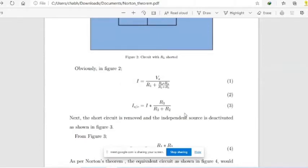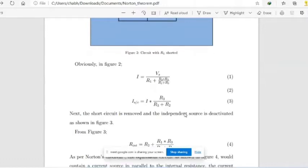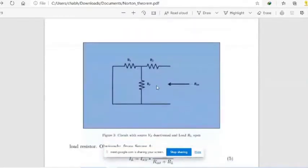In the next step now, we need to find internal resistance of circuit. That is done by replacing voltage sources by short circuit and current sources by open circuit. As shown here in this figure 3, this RINT is internal resistance.